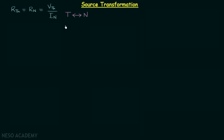There is one more name for this — we call it source transformation. In the case of Thevenin's equivalent circuit there is a voltage source present, and in the case of Norton's equivalent circuit there is a current source present. When we transform Thevenin's to Norton's we are transforming a voltage source to a current source, and when we transform Norton's to Thevenin's we are transforming a current source to a voltage source. This is why we call it source transformation.